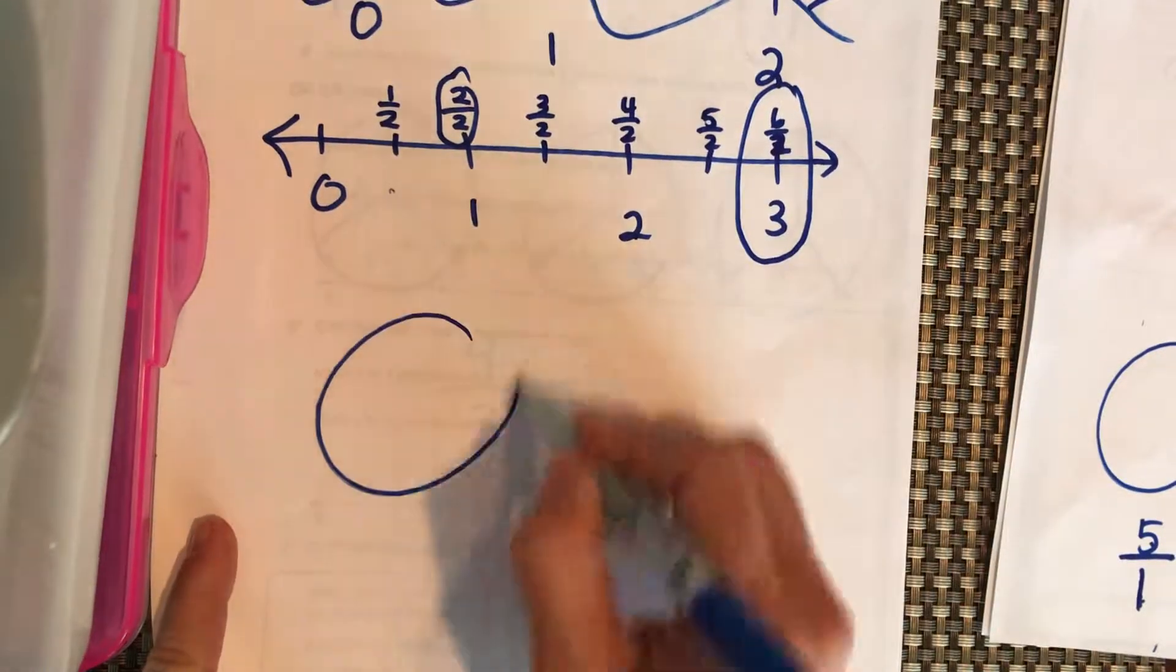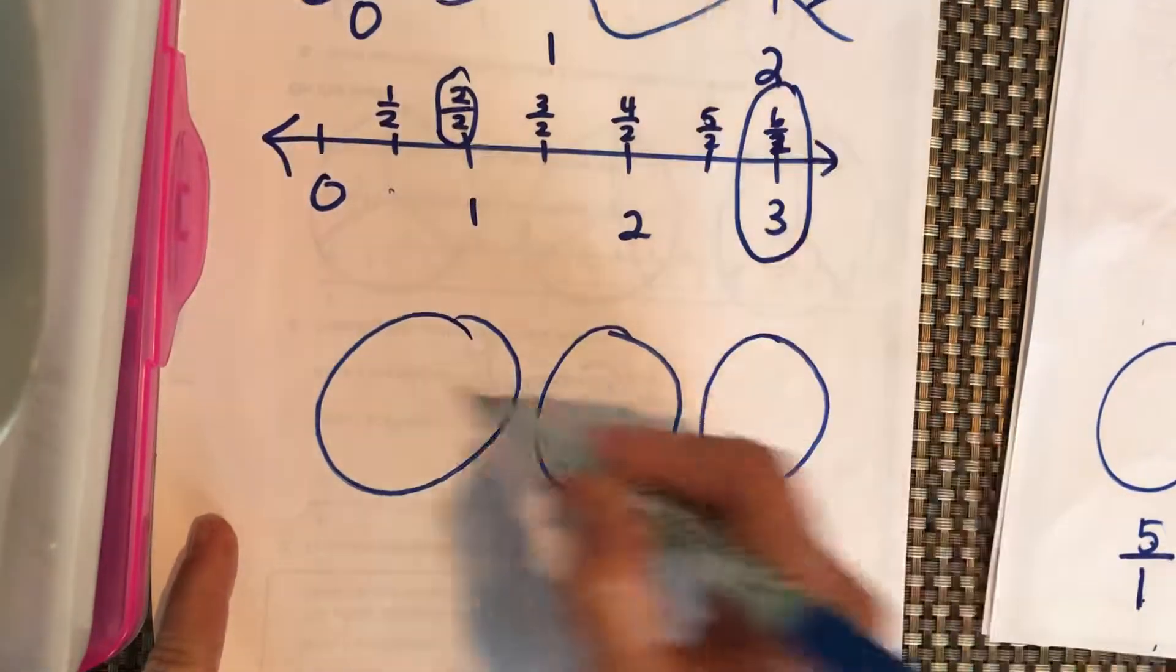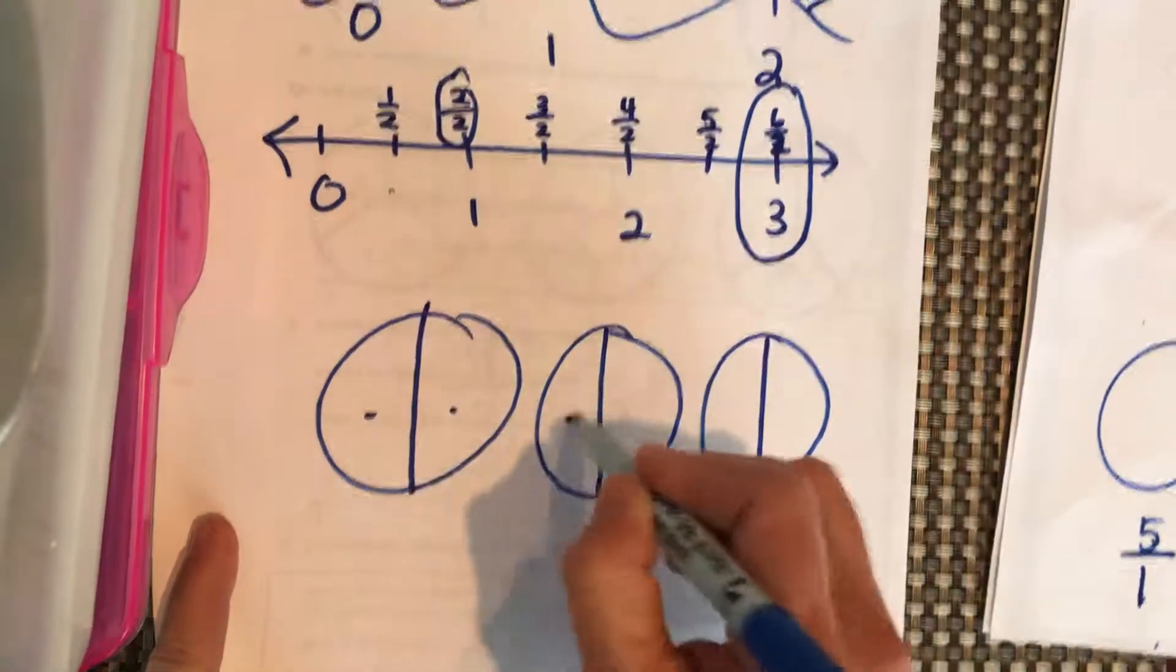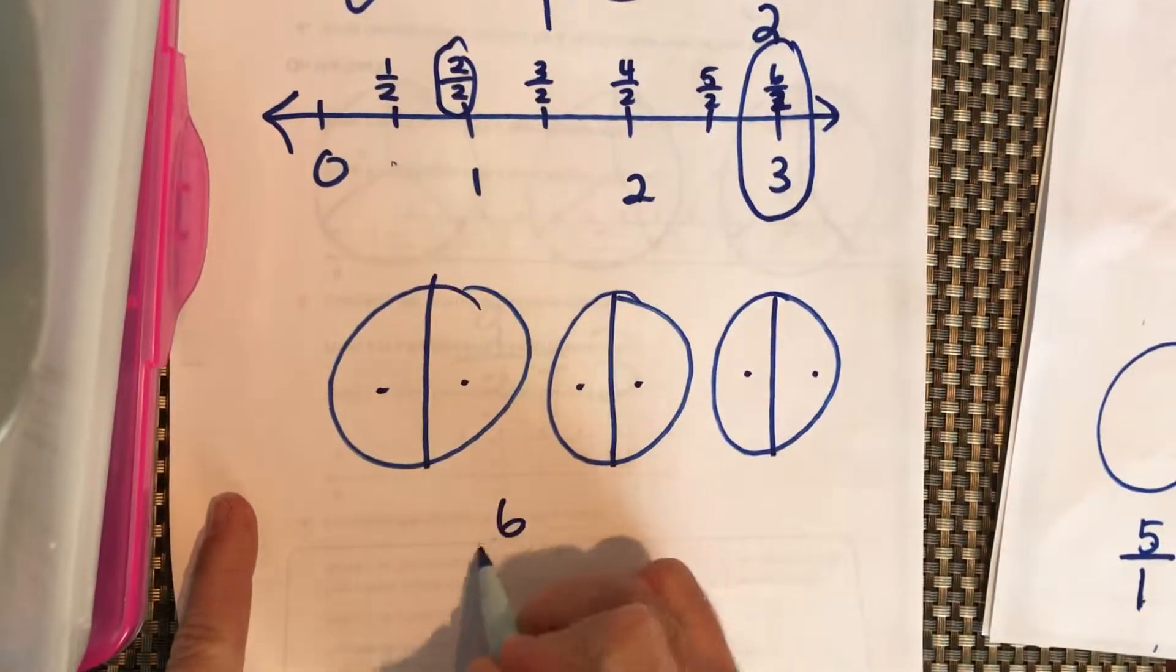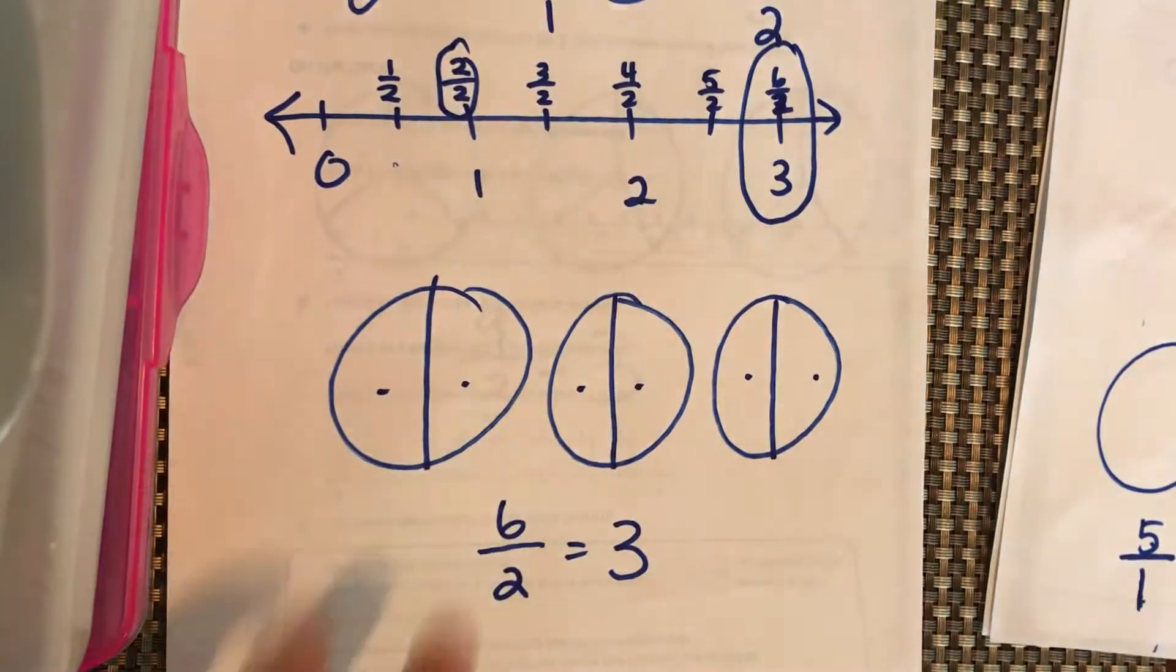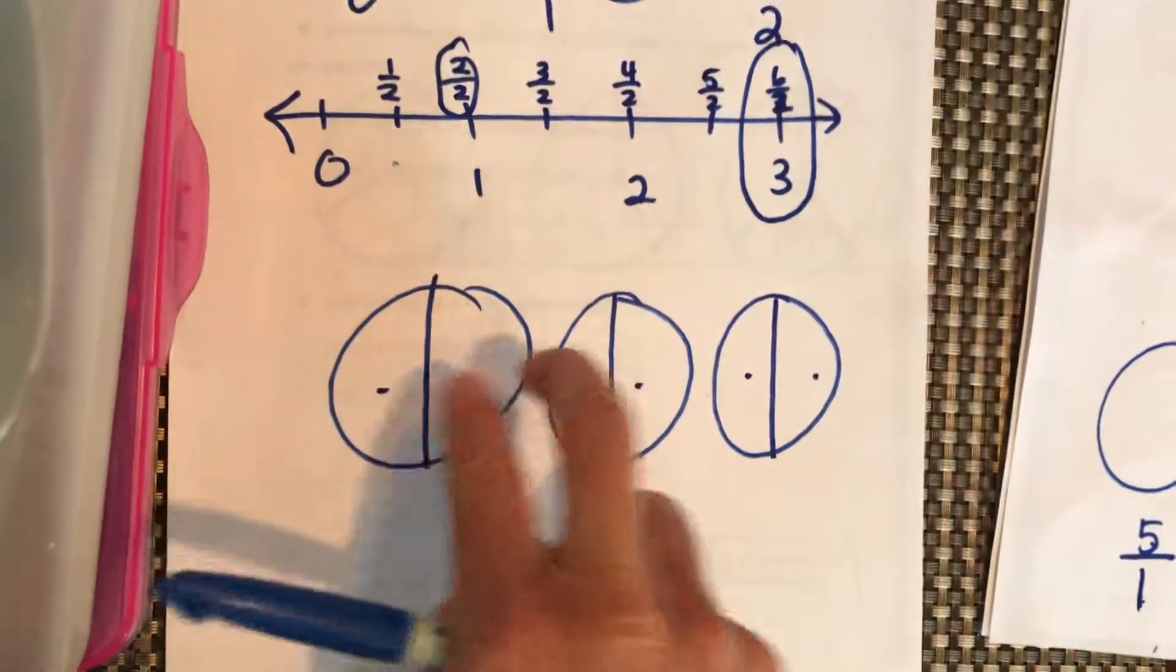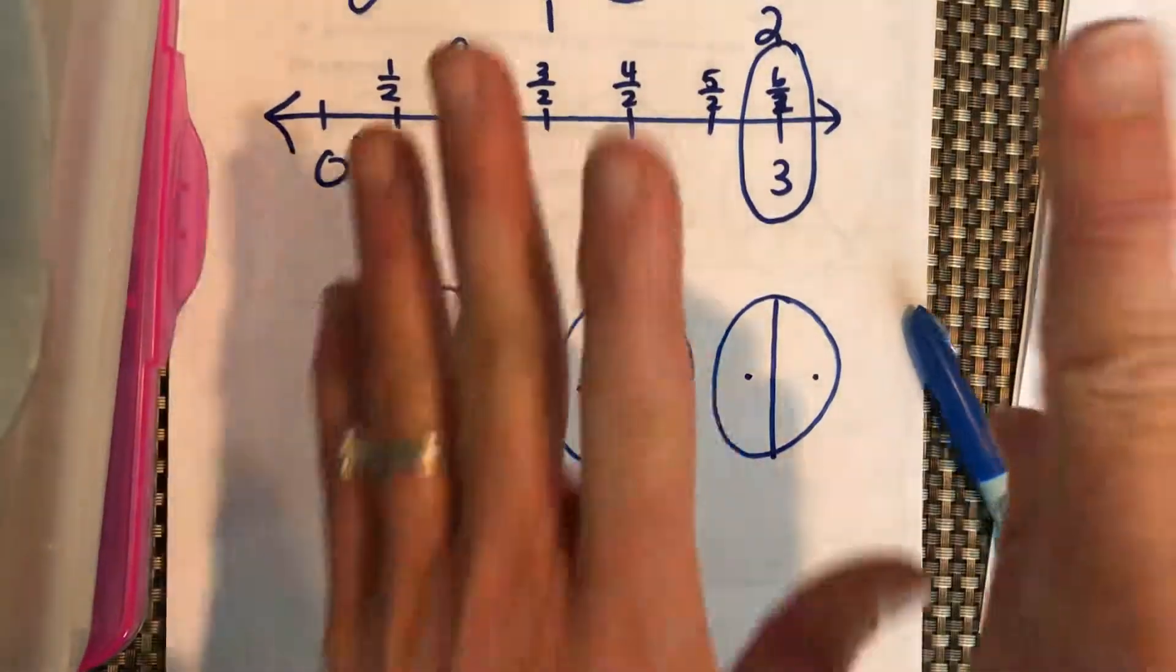What that means is, again, I have 3 pizzas. I divide each one into half. 1, 2, 3, 4, 5, 6. I have 6 halves, which equals 3 whole pizzas. 2 halves equal 1, 2 halves equal 1, 2 halves equal 1. 2 plus 2 plus 2 equals 6.